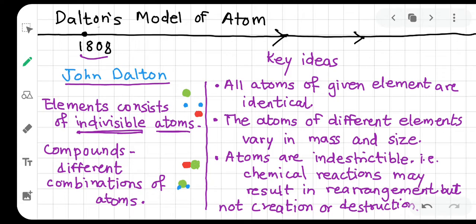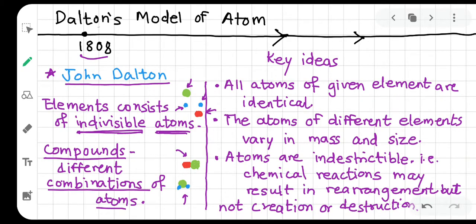After Democritus and Aristotle's long dominance, John Dalton formally stated: elements are made up of indivisible small particles called atoms, and different compounds are different combinations of atoms. All atoms of a given element are identical to each other. Atoms of different elements are different from one another — but all atoms of one particular element are the same.